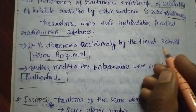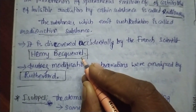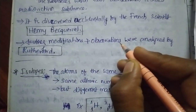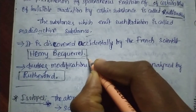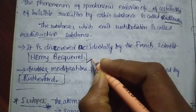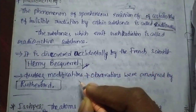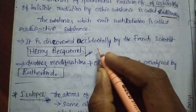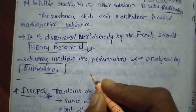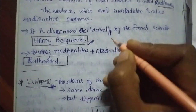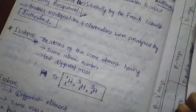Radioactivity was first discovered accidentally by the French scientist Henri Becquerel. She died in the early stages due to exposure to the radioactive substance, as radioactive substances are very harmful. Further modifications and observations were analyzed by Rutherford after her, and he worked to reduce the harmful effects of radioactive substances.